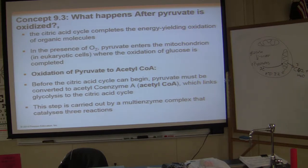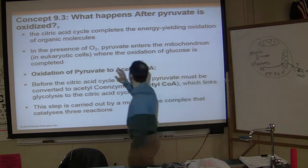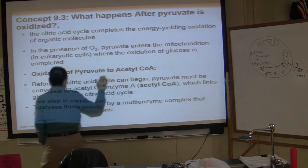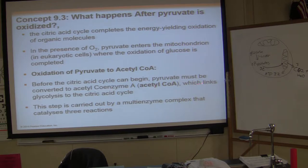Pyruvate comes to mitochondria and pyruvate breaks down. The oxidation of pyruvate to acetyl-CoA is the next thing we're going to talk about. Before the citric acid cycle can begin, pyruvate must be converted to acetyl-CoA. Now we'll show you the picture which links glycolysis to the citric acid cycle.